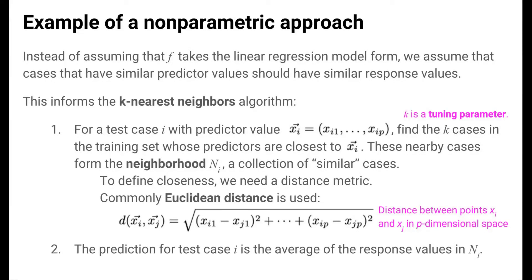Once we have the k cases that are closest, most similar to test case i, we predict the response value for case i as the average of the responses of the k cases in that neighborhood. Note that we can vary k to tweak or tune this method. As such, k is a tuning parameter of the KNN regression method.